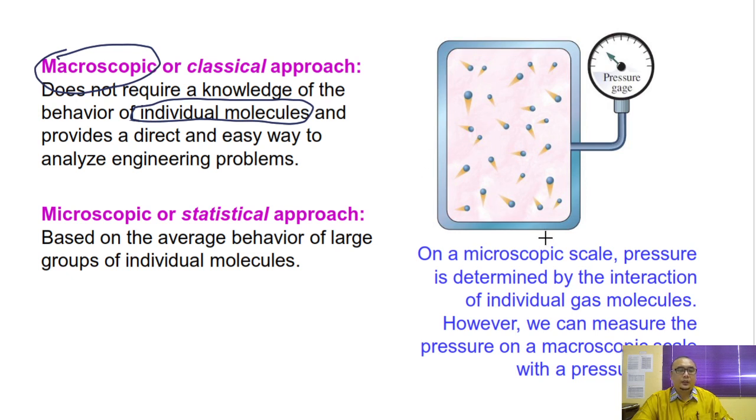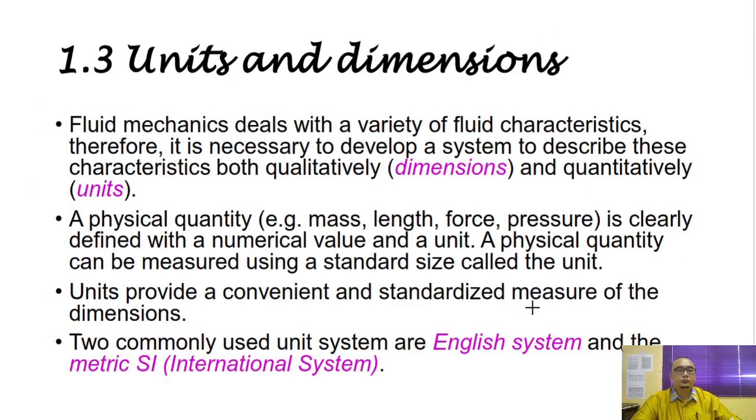Contoh yang saya bagi tadi, kita tak akan tengok kelajuan H, kita tak akan tengok kelajuan oksigen. Kita akan tengok kelajuan as a bulk, secara keseluruhan. Tapi kalau dalam chemistry ataupun fizik, kita akan kira dari segi molekul, which is kita namakan dia sebagai microscopic. Ini macroscopic.